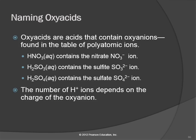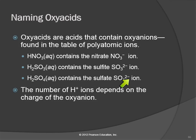Then there are the oxy acids. The oxy acids contain oxyanions. For HNO₃, cover up the H — what you have left is NO₃, the nitrate ion. For H₂SO₃, cover up the H's — SO₃ is the polyatomic oxyanion sulfite. We recognize it as an acid because it starts with H, but it has oxygen in it, so it's an oxy acid and we use a different naming system. The number of hydrogens depends on the charge of the oxyanion: nitrate has a minus 1 charge and needs one hydrogen; sulfite has a minus 2 charge and needs two hydrogens.